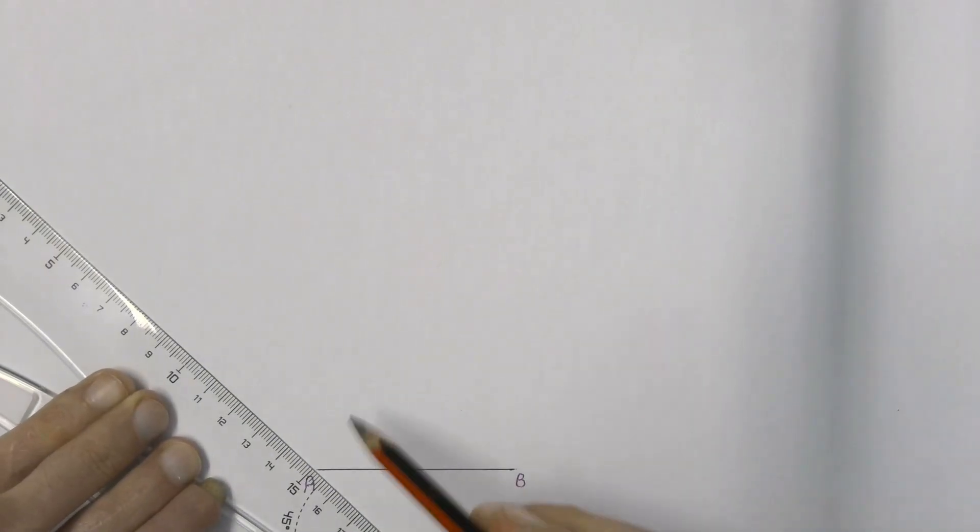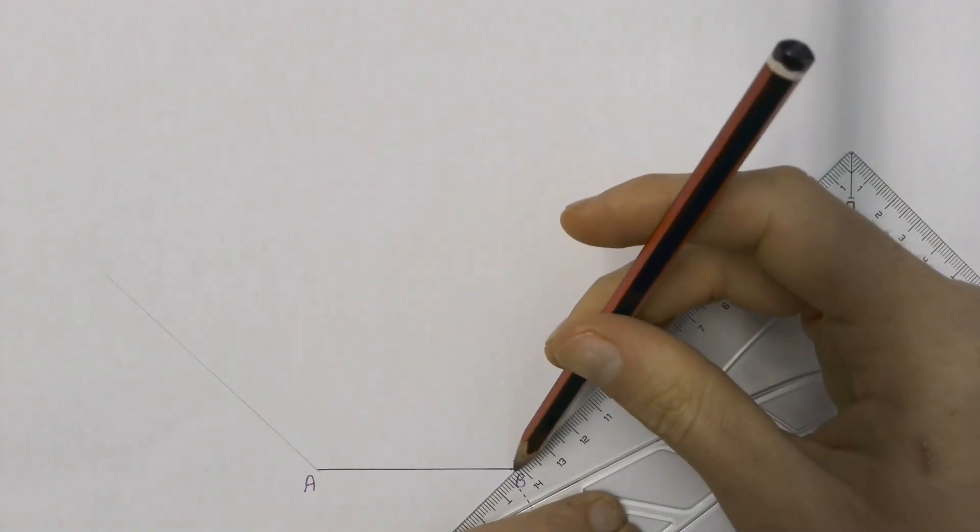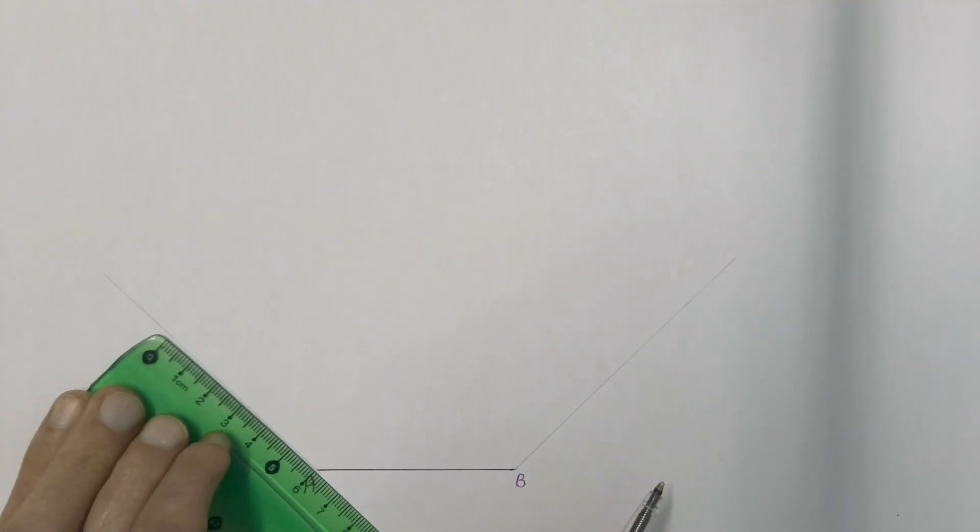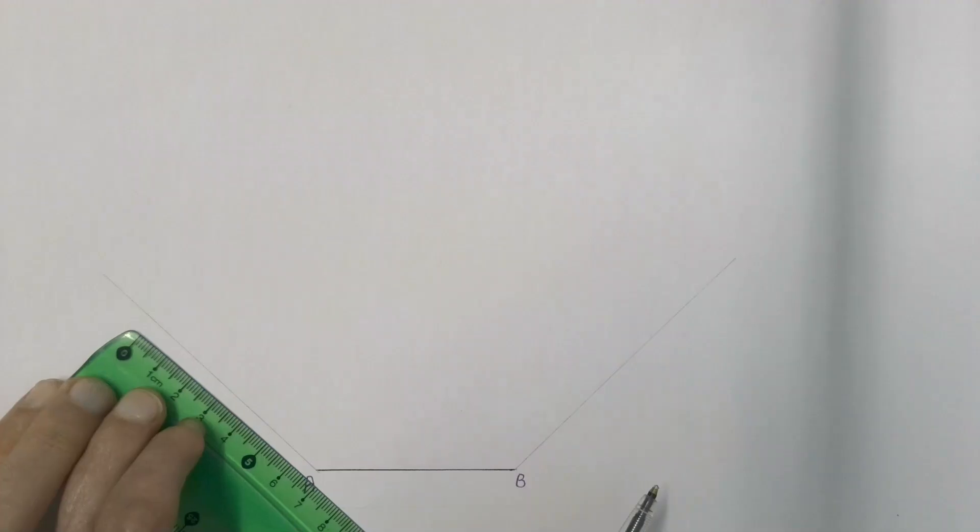Slide along to point A and draw out a construction line on one side, and then another construction line from point B. Then we are going to measure those two lines and draw lines 60mm in length.